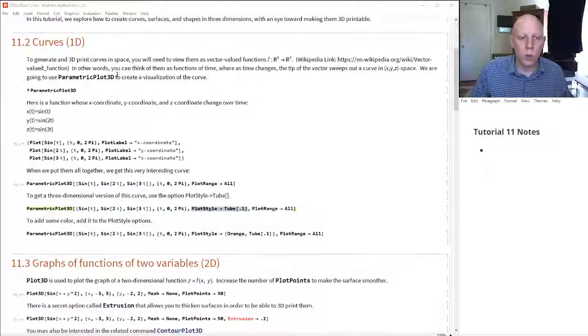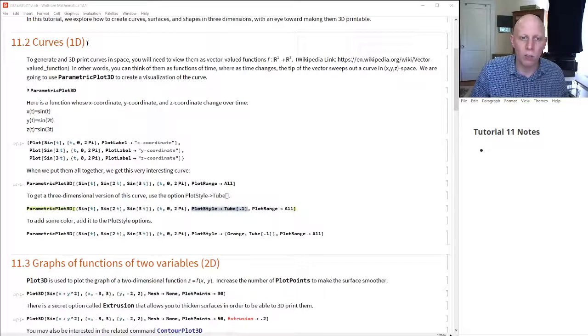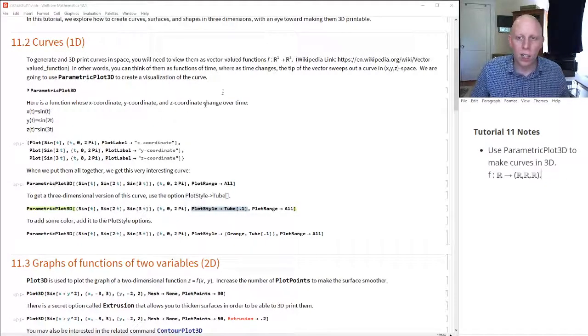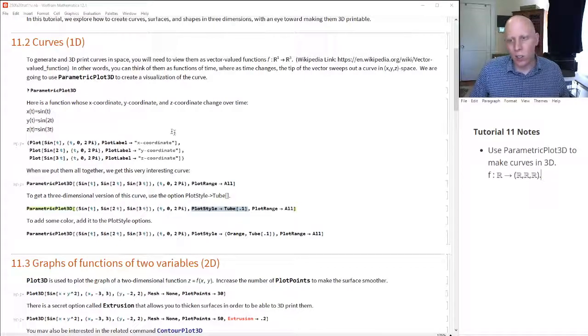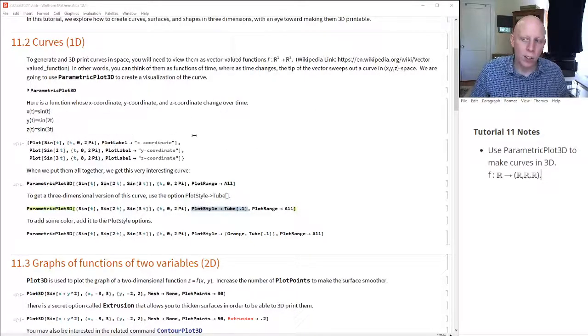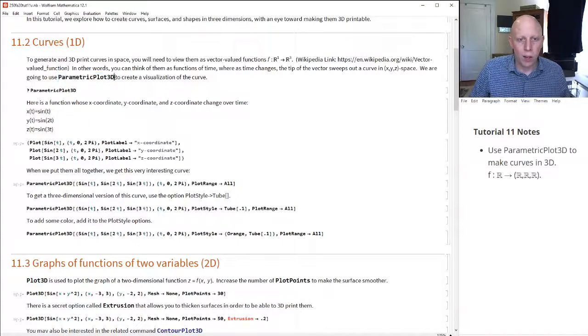So the first thing we'll talk about is curves. Let's say we wanted to make some 3D curves in space. So what that looks like is a function that goes from R¹ to R³. You can think of these as functions of time, where as time changes your curve moves throughout space and it sweeps out a curve in XYZ space. Just like we use parametric plot in tutorials before, today we're going to talk about parametric plot 3D.